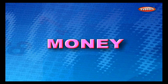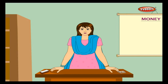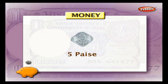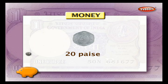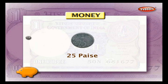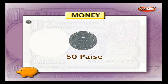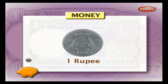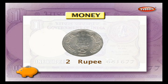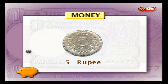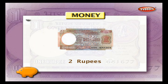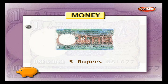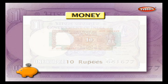Let us first have a look at the coins and notes which we use in our country. We have 5 paisa coin, 10 paisa coin, 20 paisa coin, 25 paisa coin, 50 paisa coin, 1 rupee coin, 2 rupee coin, and 5 rupee coin. The currency notes come for 1 rupee, 2 rupees, 5 rupees, 10 rupees, and 20 rupees.